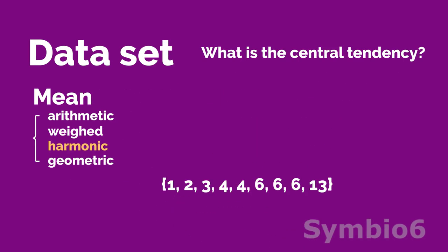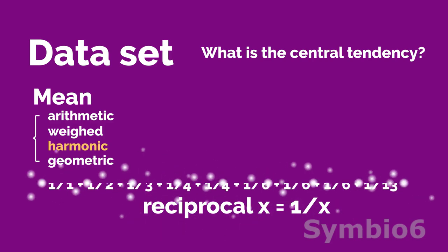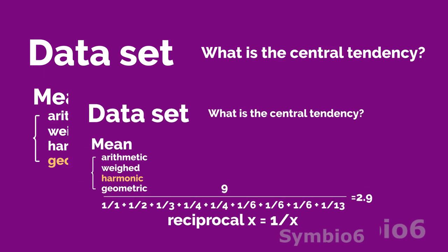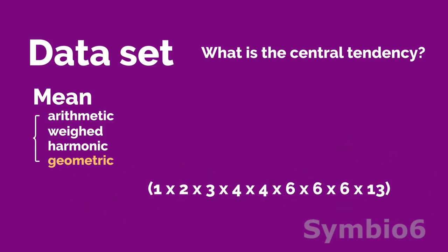The harmonic mean is a type of average calculated by dividing the number of values in a data set by the sum of the reciprocals of each value. The reciprocal of a number is 1 divided by the number. The harmonic mean of this data set is 2.9. While the other means are based on adding values, the geometric mean multiplies values and finds the n-th root of this product, where n is the number of values. For this data set the geometric mean is 4.